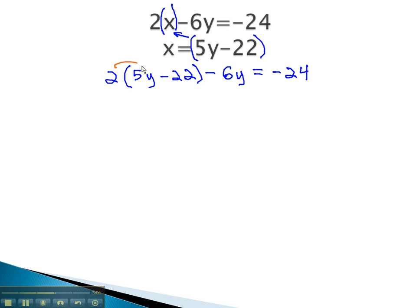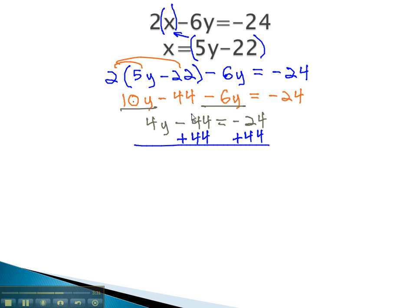We can now solve this equation by distributing the 2, giving us 10y minus 44, minus 6y equals negative 24. Combining like terms on the y gives us 4y minus 44, equals negative 24. Adding 44 to both sides will give us 4y equals 20. Finally, dividing by 4 will isolate the y, which is equal to 5.